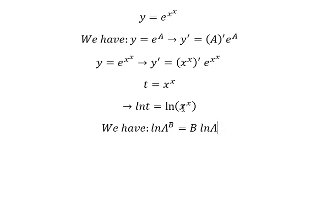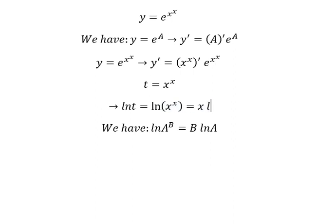So a is about this one, b is about this one. We need to transform this one into this one. And now we need to do first the derivative for both sides.